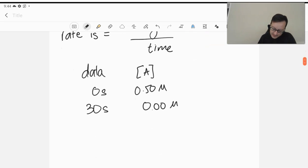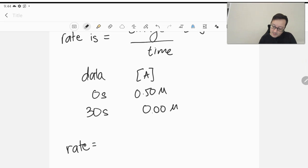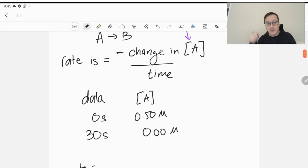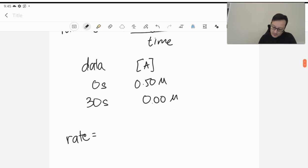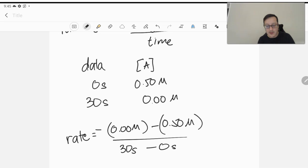And so we might be able to say for this reaction, the rate is simply, always remember change in is final minus initial. Or T2 minus T1, right? Or state two minus state one. So we're going to start at the end, at zero molar. Don't forget we're going to put a negative in front of the whole thing. Minus 0.50 molar over 30 seconds minus zero seconds.